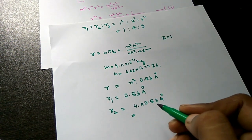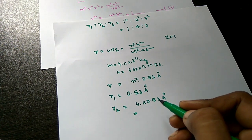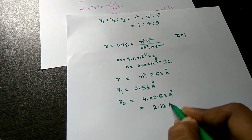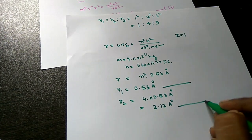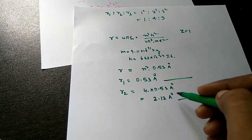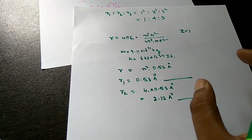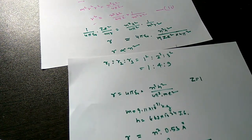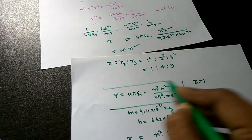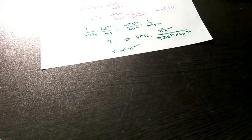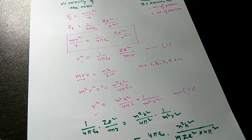For the second orbit, putting n = 2: R₂ = 4 × 0.53 = 2.12 Å. Between these two orbits there is no permissible radius. This is the expression for the radius of the orbit in hydrogen-like atoms, and the general expression includes Z in the denominator.